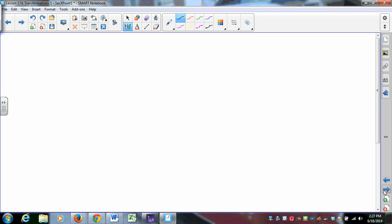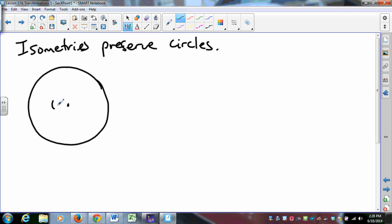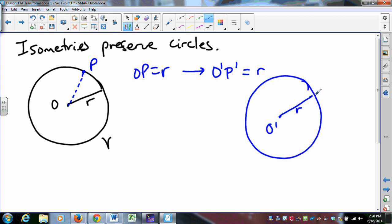Isometries preserve circles. So, I take some circle. It's centered at O. It's got a radius of R. This is some circle gamma. So, I take some generic point on the curve, on the circle there. What do I know is the distance from O to P? That's R. So, the distance between the image of O and the image of P also has to be R.